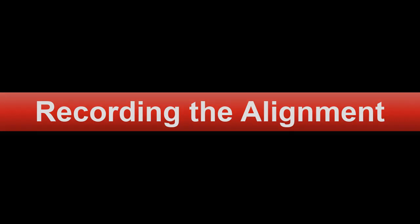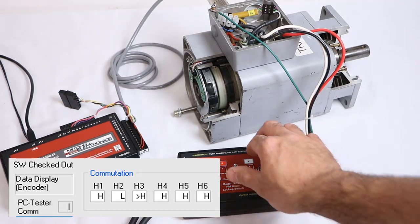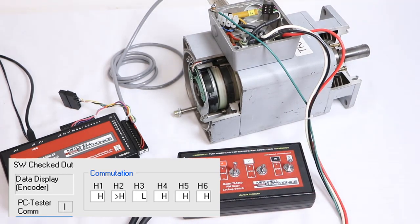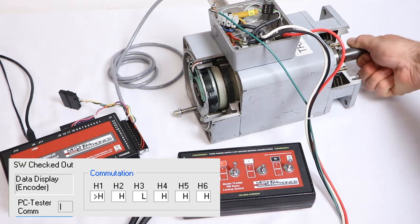If the feedback is testing well, then it's time to check the alignment. Lock the motor with the manufacturer-specific lockup pattern, then wiggle the shaft, and look for a toggling pulse, seen here.